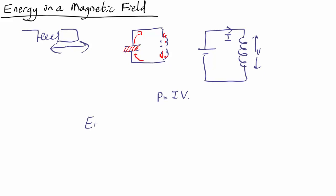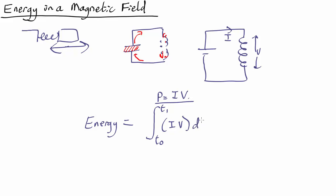The total energy in the magnetic field is going to be the sum of all the power times time while the magnetic field is produced. Summing over these things is of course an integral. So we're integrating from the starting time — when there is zero magnetic field — to the final time when we have the magnetic field whose energy density we're trying to work out. We integrate the power, which is I times the voltage, times dt. So you add up all the power over time and that tells you the total energy that has gone into producing the magnetic field.